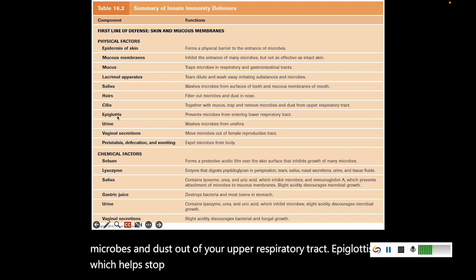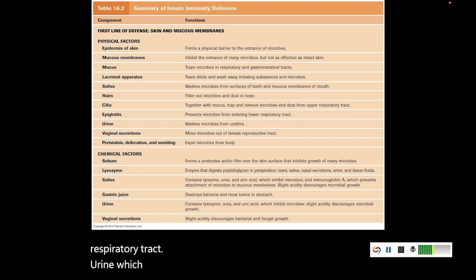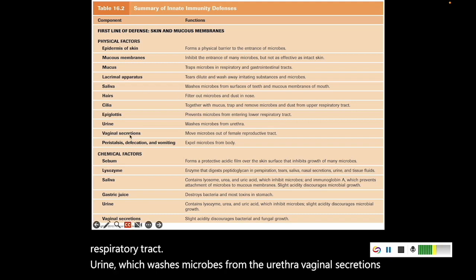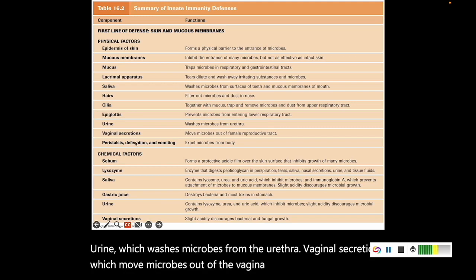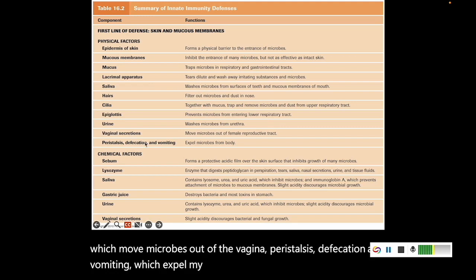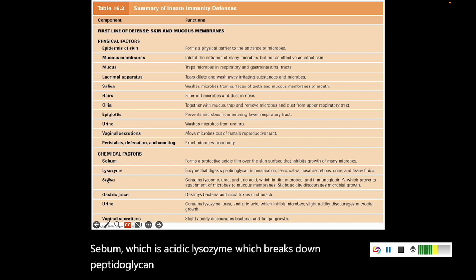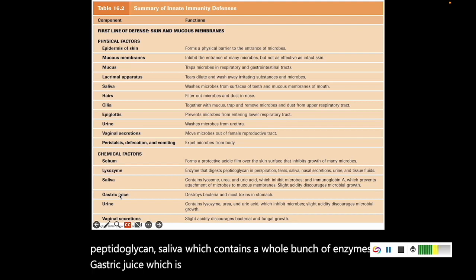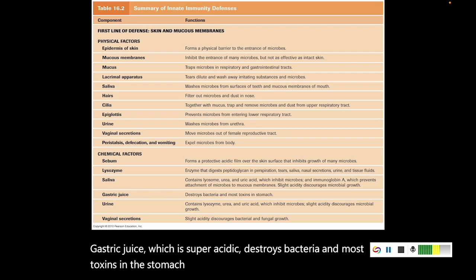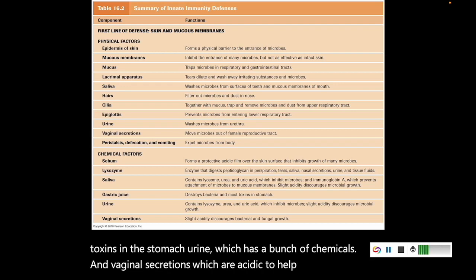Urine washes microbes from the urethra. Vaginal secretions move microbes out of the vagina. Peristalsis, defecation, and vomiting expel microbes from the gastrointestinal tract. Sebum is acidic. Lysozyme breaks down peptidoglycan. Saliva contains a whole bunch of enzymes. Gastric juice is super acidic and destroys bacteria and most toxins in the stomach. Urine has a bunch of chemicals. And vaginal secretions are acidic, which helps reduce fungal growth.